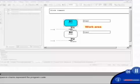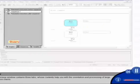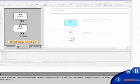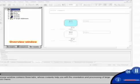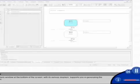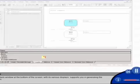The sequence chains represent the program code. The overview window contains three tabs whose contents help you with the orientation and processing of large sequence chains. The details window at the bottom of the screen, with its various displays, supports you in generating the program.